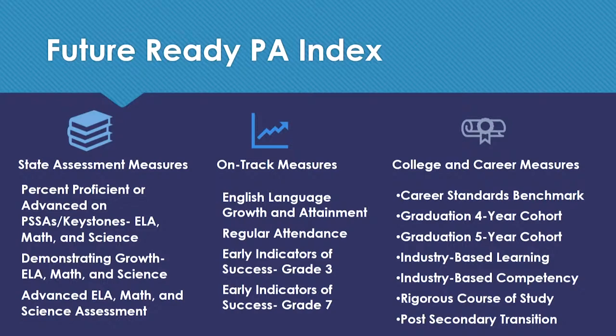Looking at what we can do as a community and as a school district — the Future Ready Index is a public-facing site. That information will have state assessment measures, on-track measures, and college and career readiness. It will include proficiency and advanced for PSSA and Keystone in math, science, and ELA, as well as areas of demonstrating growth, English language growth and attainment scores, regular attendance, early indicators of success beginning in third grade for ELA, early indicators in grade seven for math, college and career benchmarking, graduation cohorts, industry-based competencies, and post-secondary transition.